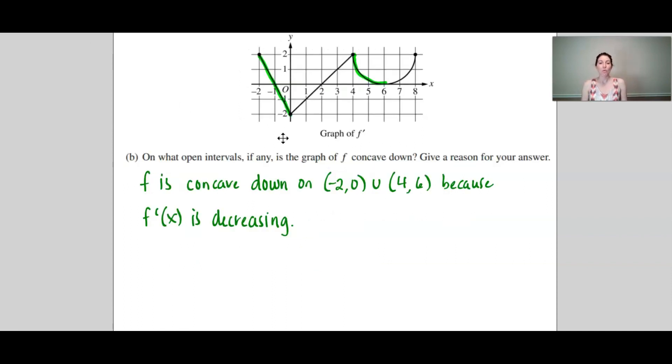Moving on to part b, we want to know when is the graph of f concave down. f is concave down when f double prime is negative. And because we are given the graph of f prime, we are looking for where f prime is decreasing because that's where f double prime would be negative. I can see that f prime is decreasing from negative 2 to 0, and also 4 to 6. Therefore, that is when f is concave down.